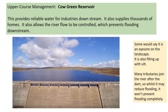On the negative side, some would say it's an eyesore on the landscape, and it's also filling up with silt. Many tributaries join the river after the dam, and so whilst this may reduce flooding, it won't prevent flooding completely because extra water is always going to be added from the tributaries after the dam.